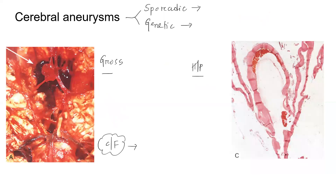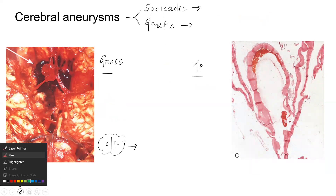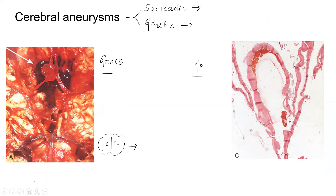Most cases of cerebral aneurysm are sporadic. Usually these are associated with smoking and atherosclerosis.